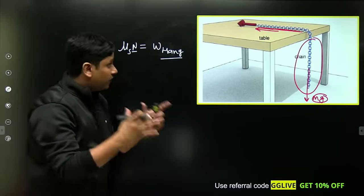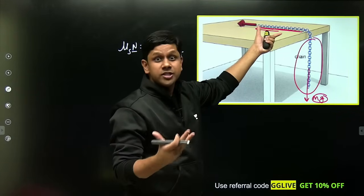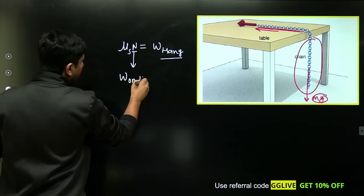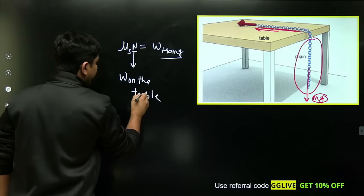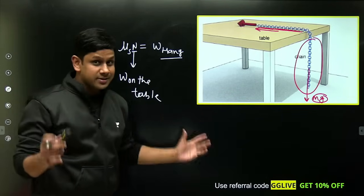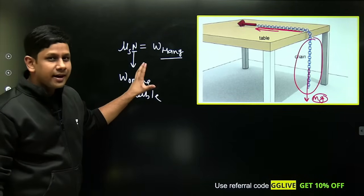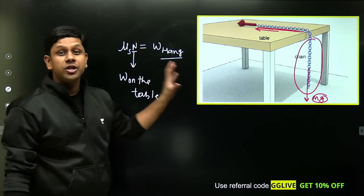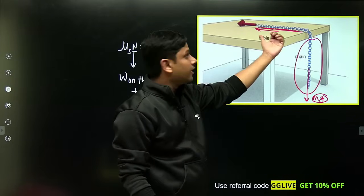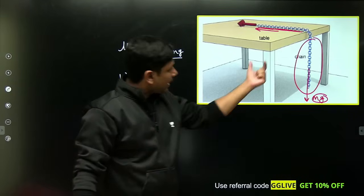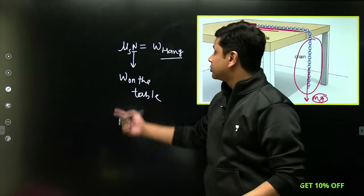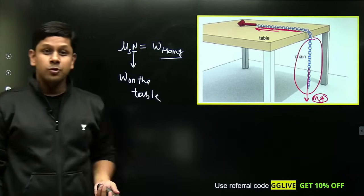So this normal force will be weight of the chain on the table. If somehow we can find out the weight of chain on the table and weight of chain which is hanging, then we can calculate. This is the basic idea behind chain problems: the hanging part will try to pull it down, but the friction force between table and chain will try to keep it in equilibrium. Maximum hanging part's weight will be balanced by maximum friction force value, which is μ_s multiplied by N.